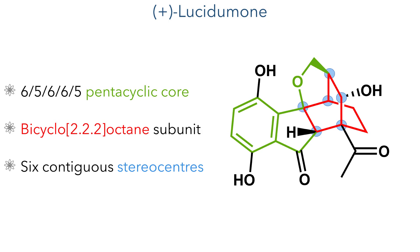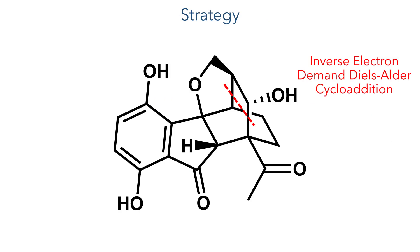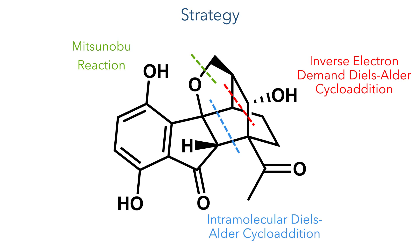This polycyclic framework has six contiguous stereocenters embedded within it. To construct this ring system, the researchers planned on first using an inverse electron demand Diels-Alder cycloaddition, followed by a Mitsunobu reaction to tether the two halves of the molecule together. This would set the stage for an intramolecular Diels-Alder reaction that would then complete the polycyclic core.